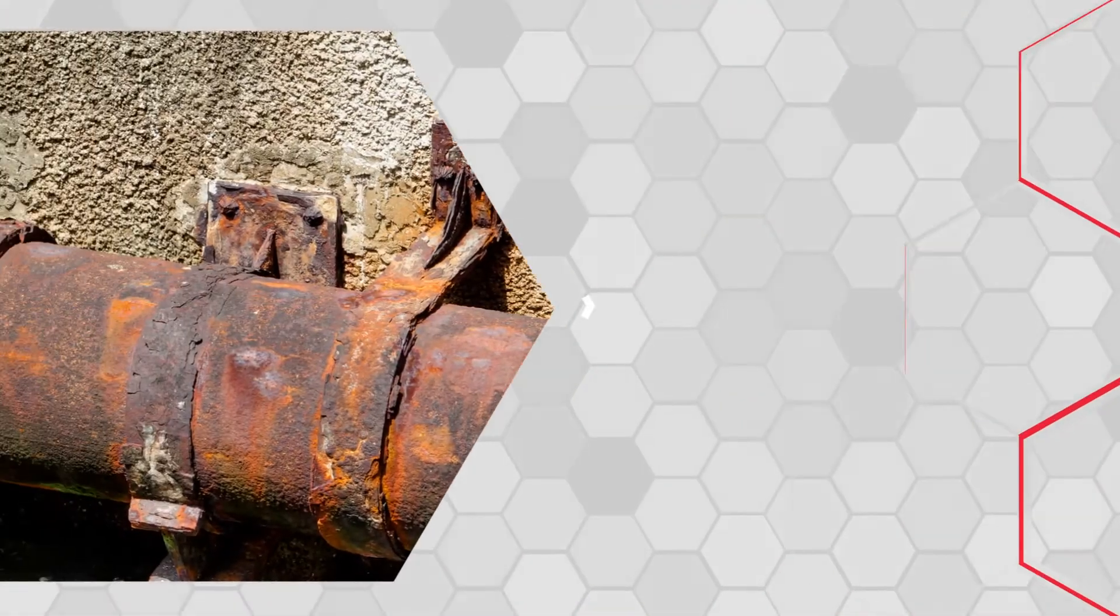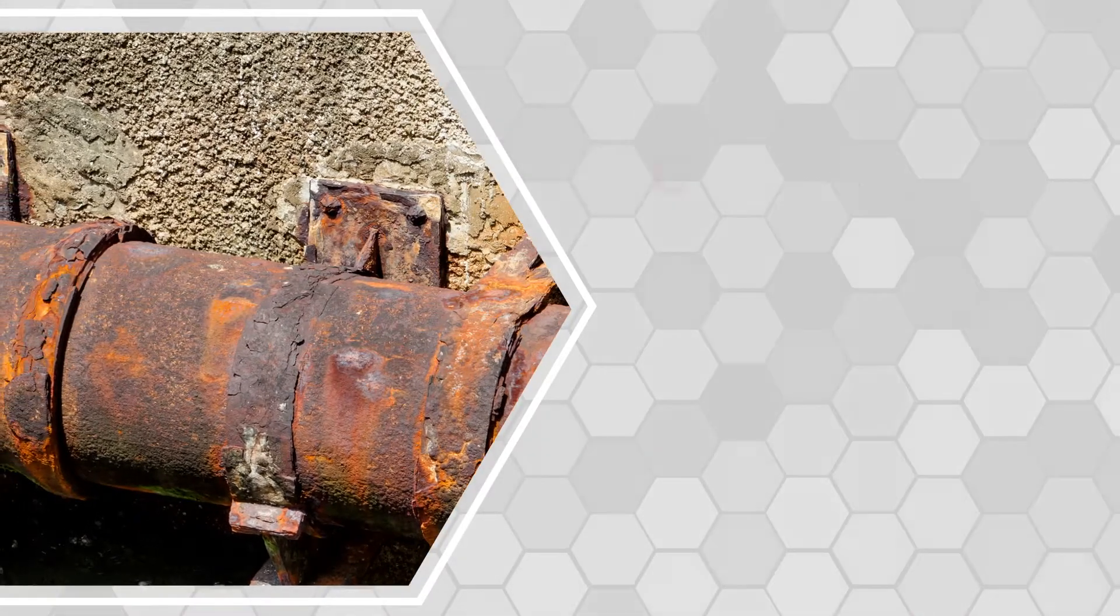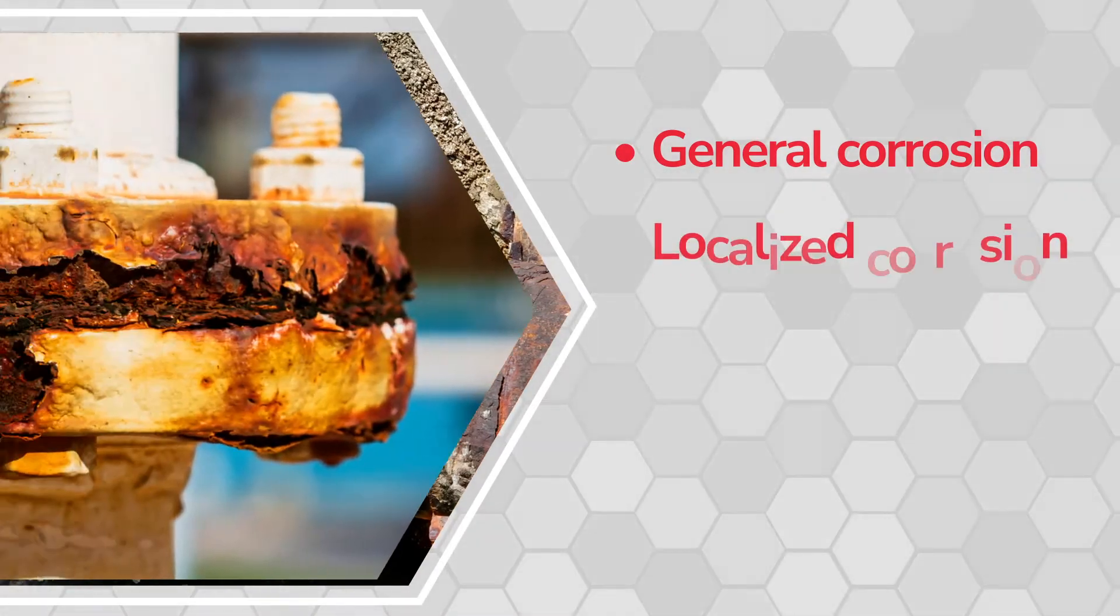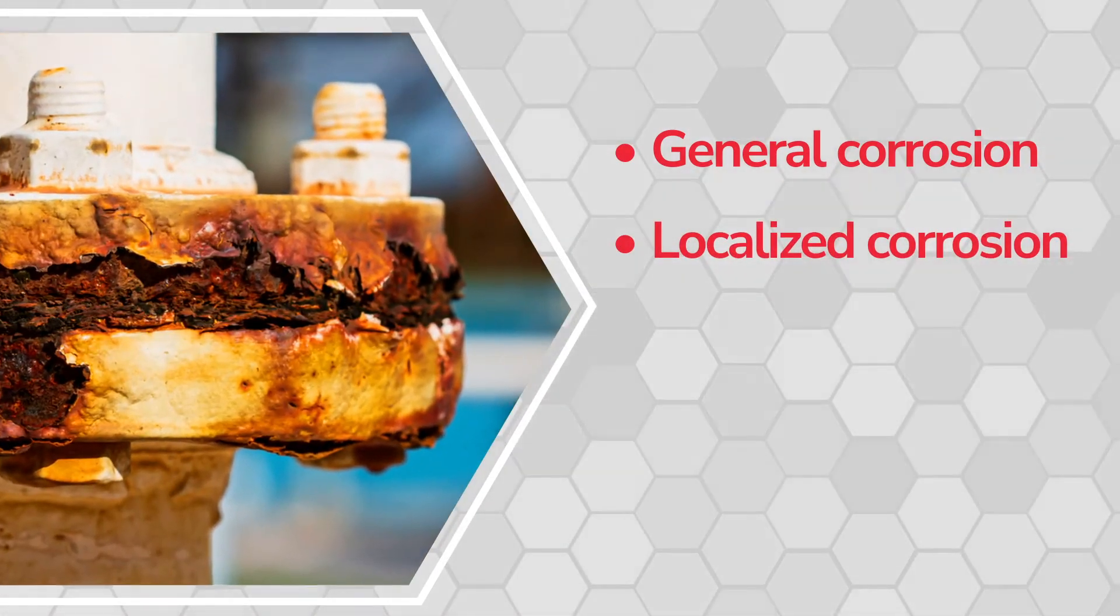Once corrosion is identified, it can be classified as general corrosion, which is more or less uniform over an exposed surface, or localized corrosion, which occurs at discrete sites.